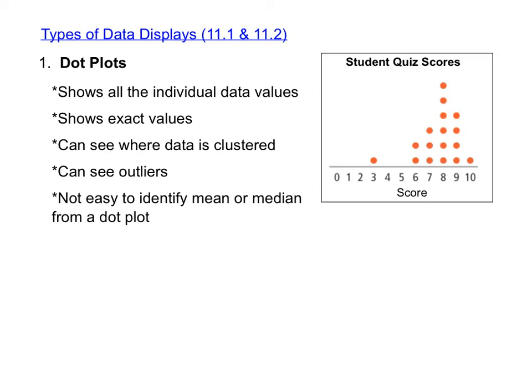The first thing we learned in Chapter 11 was three different types of data displays. On your test, you won't be making the data displays, but you will be answering questions about each of the data displays in general, and you also might have to interpret some information based on a data display that's given to you. The first type of data display that we learned about was a dot plot. Remember that dot plots show us all the individual data values — you can see all of the exact values by looking at the dots on the dot plot.